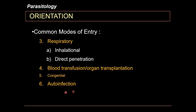Auto-infection is a special route of entry wherein a person already infected by a parasite gets infected by the offspring of that same parasite within their own body, without the offspring needing to undergo developmental changes outside the host. The offspring matures inside the body and develops into adult parasites that re-parasitize the same host. Not all parasites can do this — most need to expel ova or larvae outside the human host to complete their life cycle.